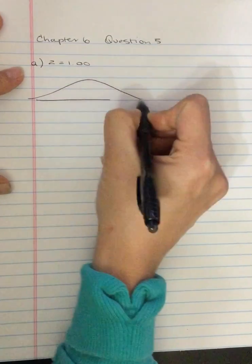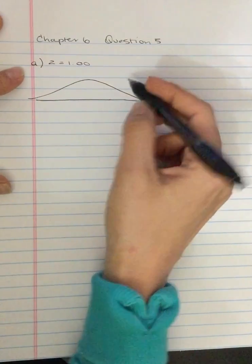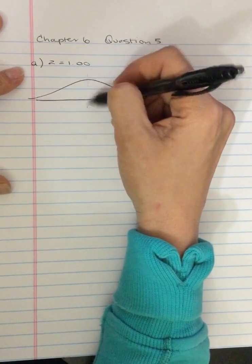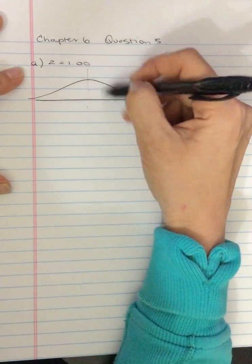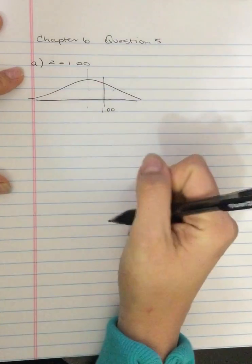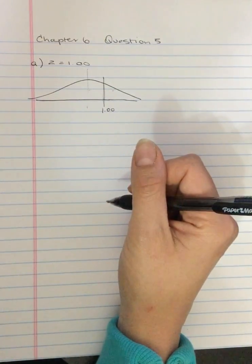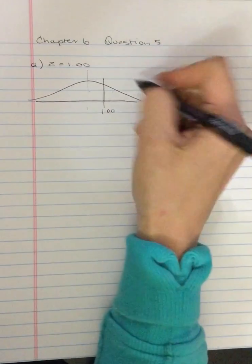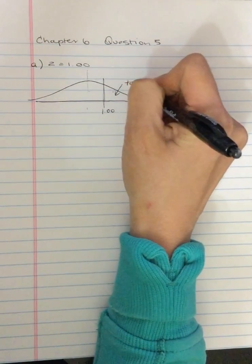the positive Z-scores are to the right of the mean. And so, the tail is on the right, so the tail is here.